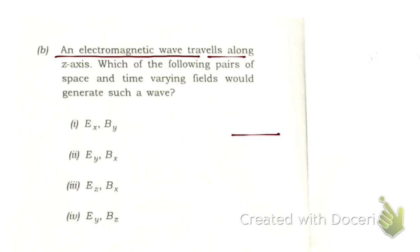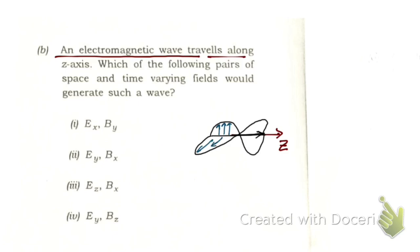Next question: an electromagnetic wave travels along the z-axis. If the wave is traveling along the z-axis, then the magnetic field and electric field must be directed perpendicular to the direction of propagation. The direction of the wave, the electric field, and the magnetic field must all be mutually perpendicular.